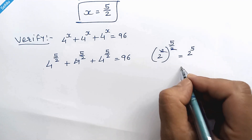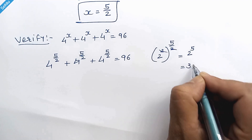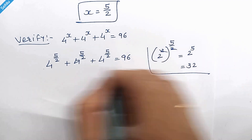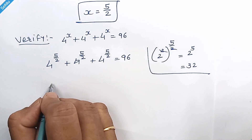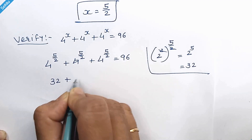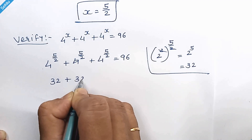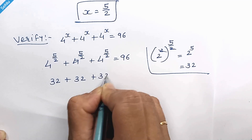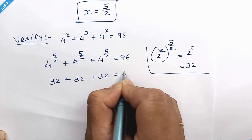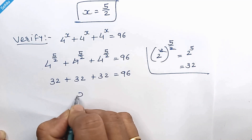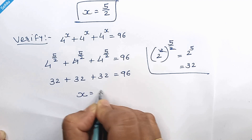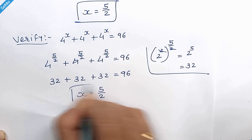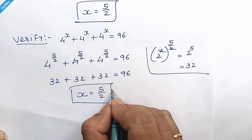And 2 to the power 5 is 32. So we have 32 plus 32 plus 32 is equal to 96. Therefore x is equal to 5 over 2 is the correct answer.